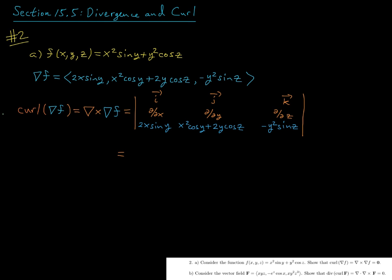Now our job is to compute the curl of this vector field, which is the cross product of the del operator with this vector field, computed using a three by three determinant. For the i component, we take the determinant of the two by two matrix formed by deleting out the first column and first row. The y derivative gives minus 2y sine z, and we subtract the z derivative, which is also minus 2y sine z. These cancel out, so we get zero for the i component.